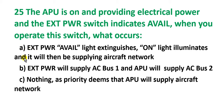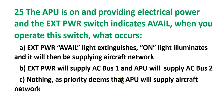These are the answers. Answer A: external power available light extinguished and on light illuminates, and it will then be supplying the aircraft network with external power only. Answer B: external power will supply AC bus number one and APU will supply the AC bus for the aircraft network.